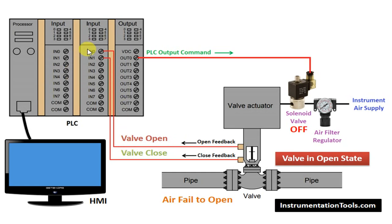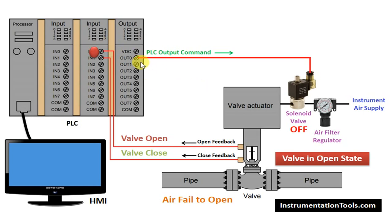Then the PLC accordingly will forward the status to the HMI, which will in turn display it to the operator. Now, we will assume that this valve is in open state. So, the open proximity switch feedback will flow to the PLC. See, the valve is in open state, so the open proximity switch feedback is activated and the signal is sent to the PLC. From the PLC, you can then pass the signal and display it to the HMI for operator indication.